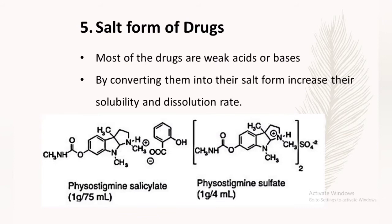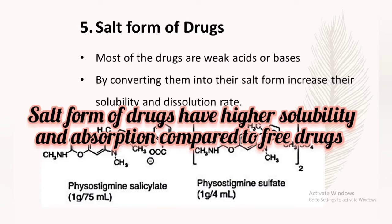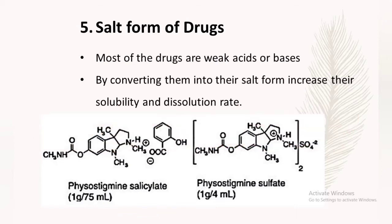Generally, a weak acidic drug is prepared as its strong basic salt. As you can see in the picture, different salts have different solubility and absorbability. Physostigmine salicylate has a solubility of 1 gram per 75 mL of water, whereas physostigmine sulfate has a solubility of 1 gram per 4 mL. So physostigmine sulfate will be more readily absorbed in the body compared to physostigmine salicylate.